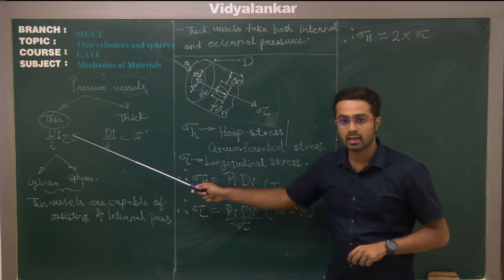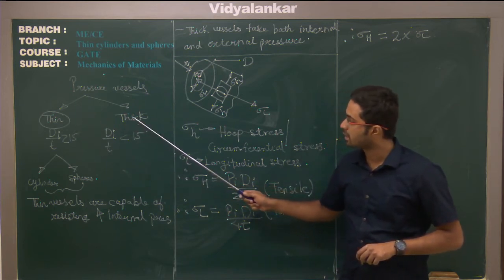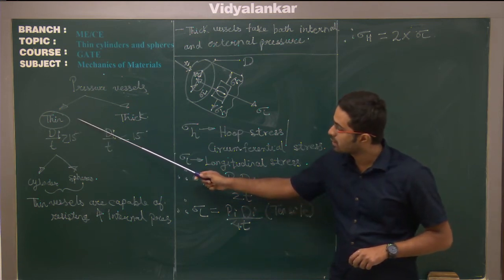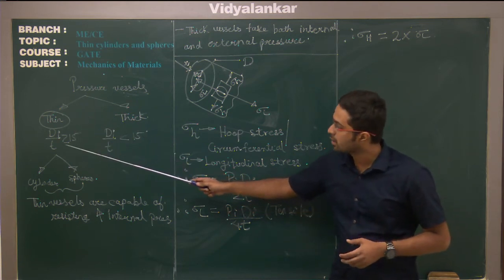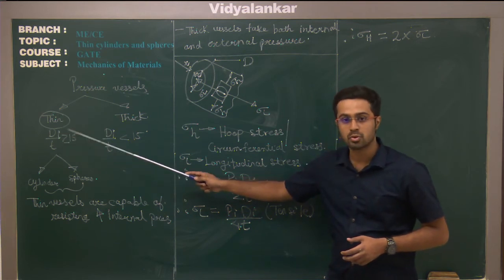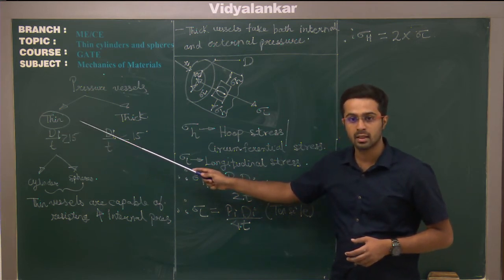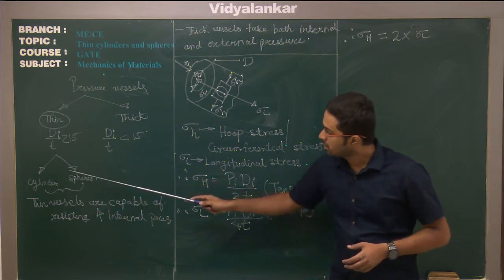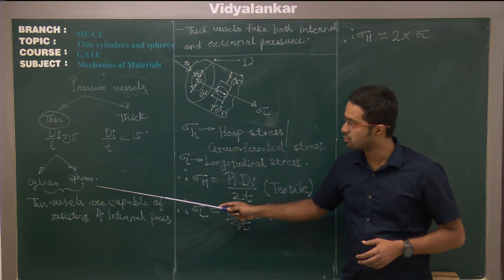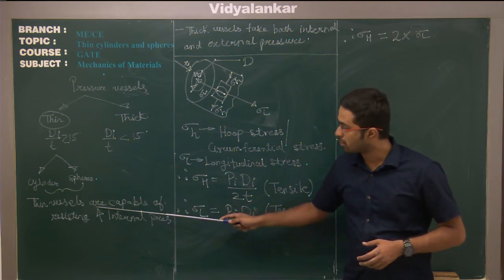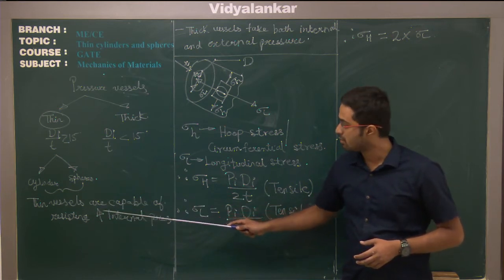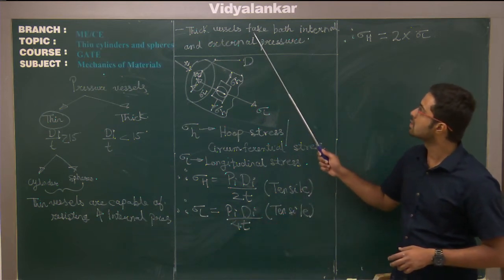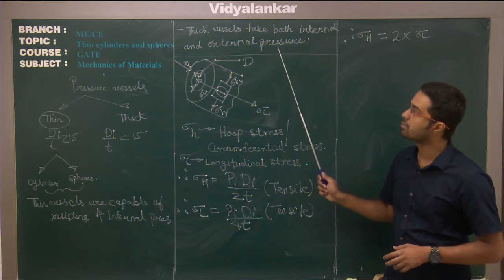These vessels have two categories: thin vessels and thick vessels. When your internal diameter to thickness ratio is greater than or equal to 15, then it is thin; otherwise it is thick. Depending upon the geometry, we have classified them as cylinders and spheres. The important thing to note is that thin vessels are capable of resisting high internal pressures, while thick vessels handle both internal and external pressures.